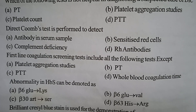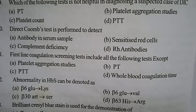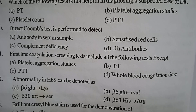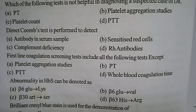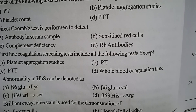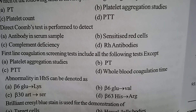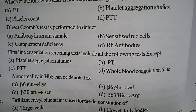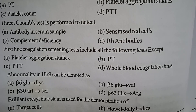Next one: the abnormality in HbS in sickle cell anemia can be denoted as? Option A: β6 glutamic acid to lysine. Option B: β6 glutamic acid to valine. Option C: β30 arginine to histidine. Option D: β63 histidine to arginine. Correct answer: option B, β6 glutamic acid replaced by valine — at the sixth position of the beta chain, glutamic acid is replaced by valine.